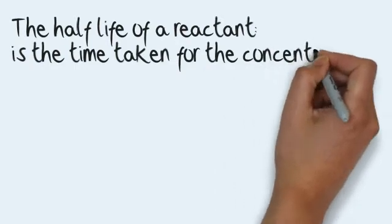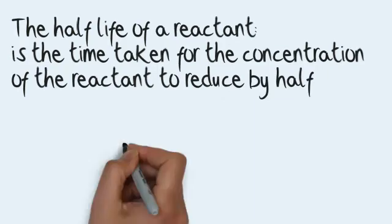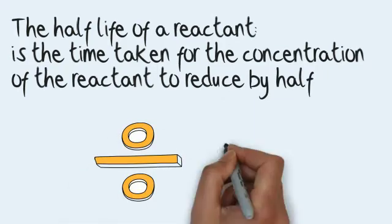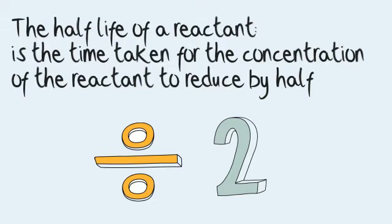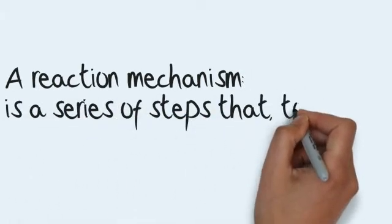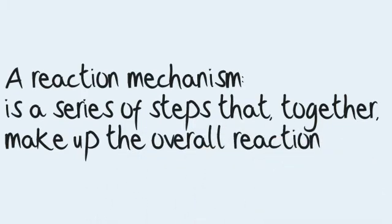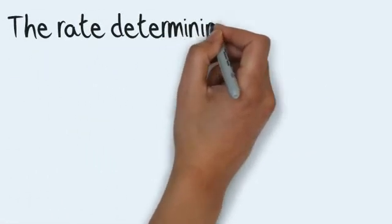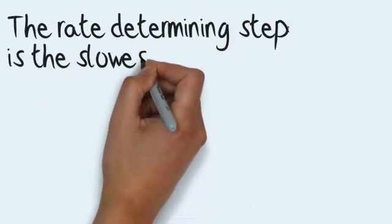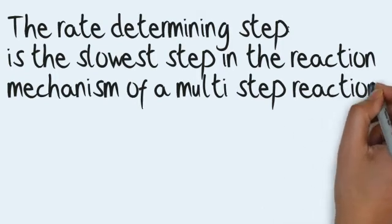The half-life of a reactant is the time taken for the concentration of the reactant to reduce by half. A reaction mechanism is a series of steps that, together, make up the overall reaction. The rate-determining step is the slowest step in the reaction mechanism of a multi-step reaction.